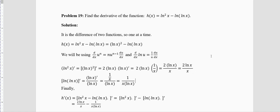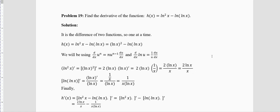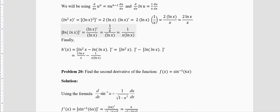You can write 2lnx/x slightly differently using properties of ln, but do not worry about it. No more useful algebra can be done here. h′(x) = 2lnx/x − 1/(x·lnx) is your final answer.